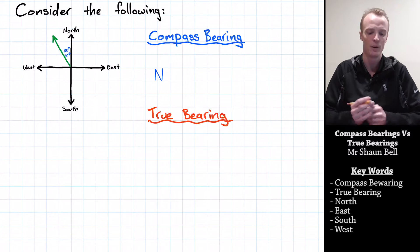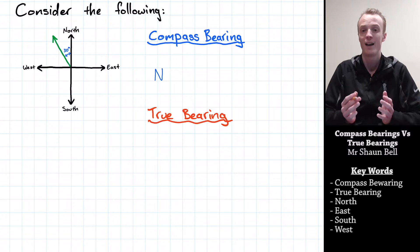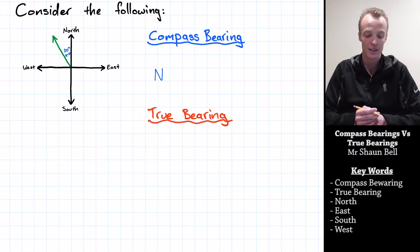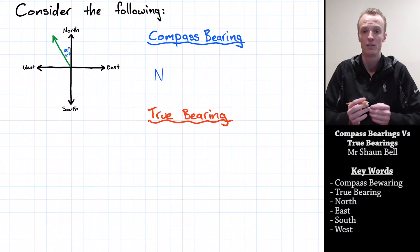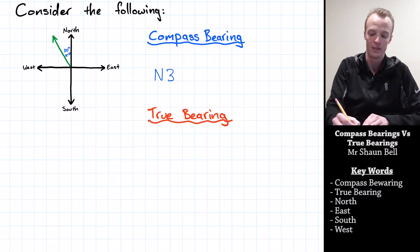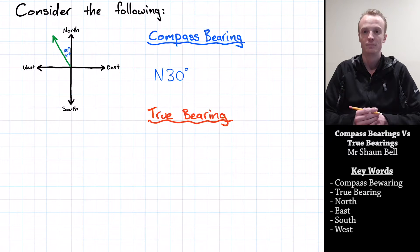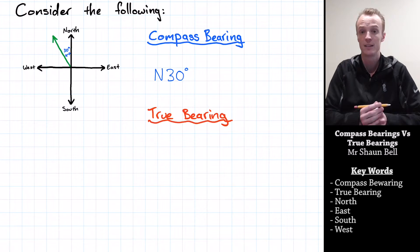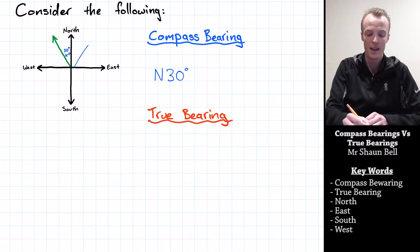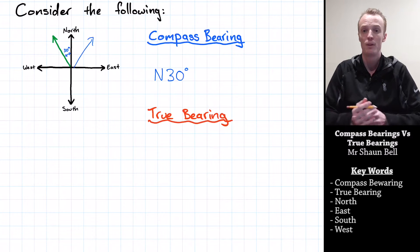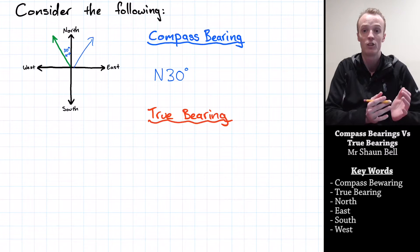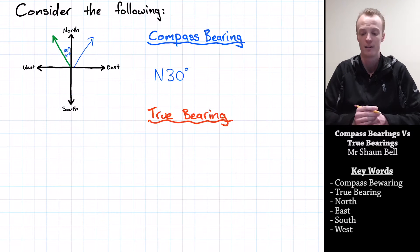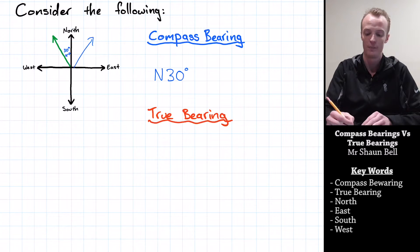The second question we need to answer is: how far away is it from that North direction? In this case we can see that it's 30 degrees away, so we put that 30 degrees after the N. However, 30 degrees from North can be either to the left or to the right, so we need to tell the person whether it's 30 degrees in the West direction or 30 degrees in the East direction.